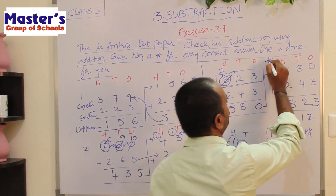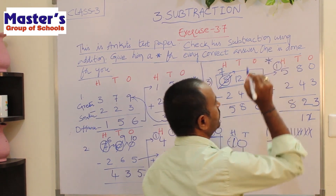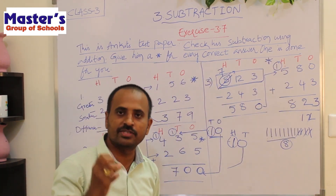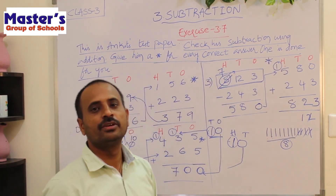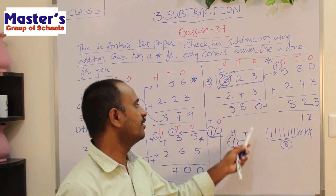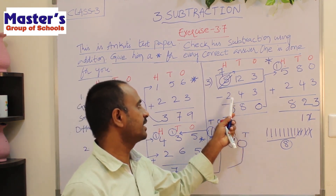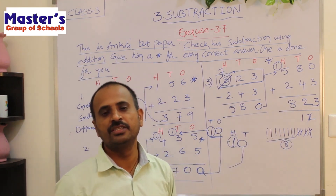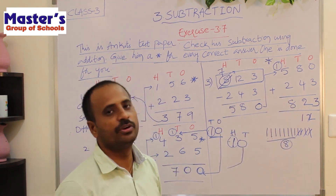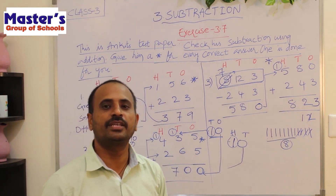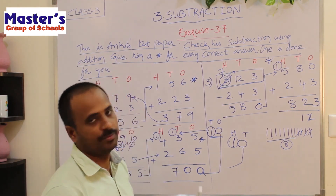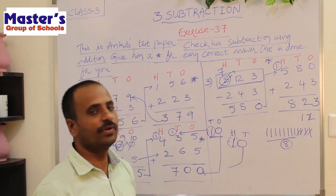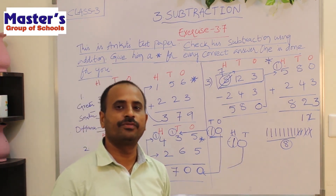Put a star mark on the first problem. In this way we can verify our subtraction by using addition. We have to add the second number to the difference — if we get the first number, our subtraction is correct. Practice the remaining problems at home as homework from the PDF.